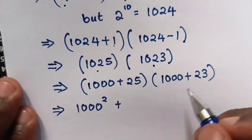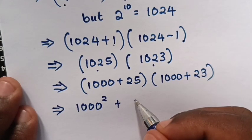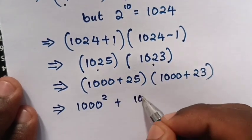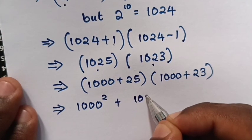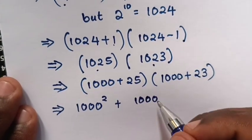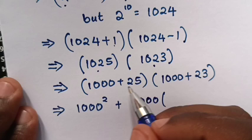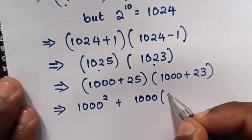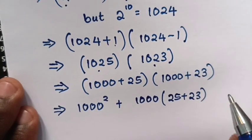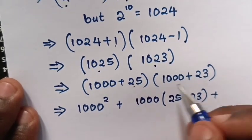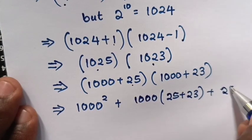Now we multiply: 1000 times 1000 is 1000^2, plus 1000 times 23 is 23,000. So we write first 1000 because it will be common, and then 25 times 1000. 1000 is common, so we add 25 + 23 inside the bracket, plus 25 times 23.